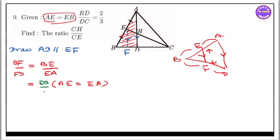Now we can use E by EE. Now we can use Eb by E1, by E and E, by E are 1.